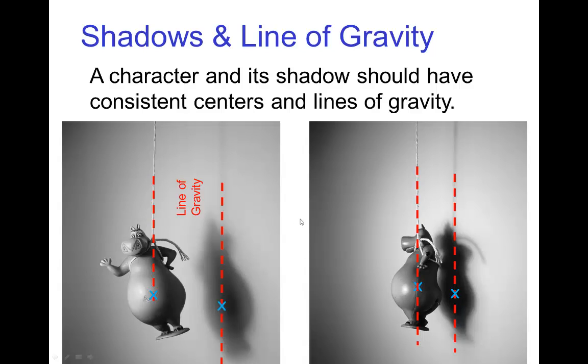One last thing about the center of gravity and line of gravity is the line of gravity has to be consistent no matter what the camera angle, and along with that the shadow of a character has to have a consistent line of gravity. So in these photos of a doll,